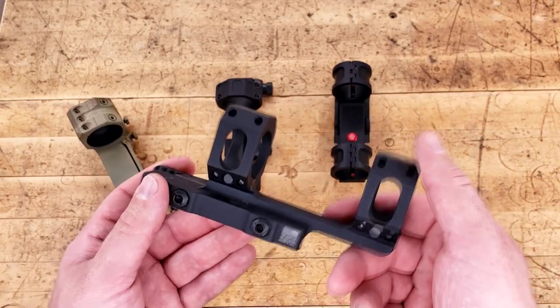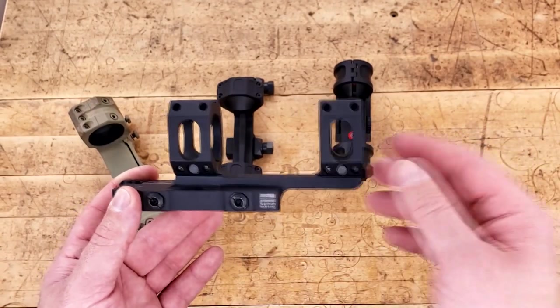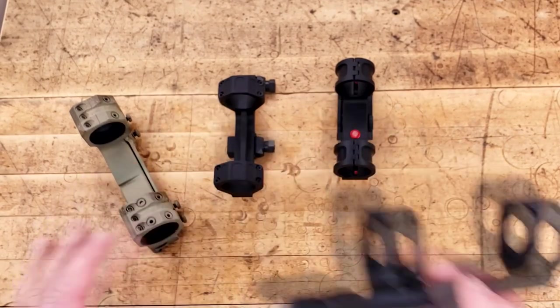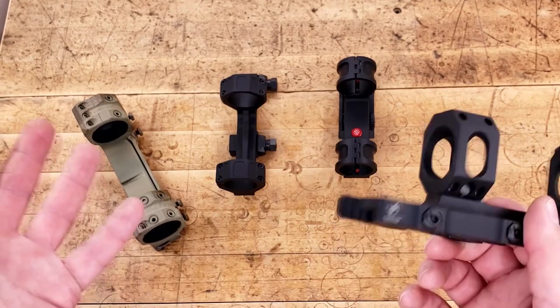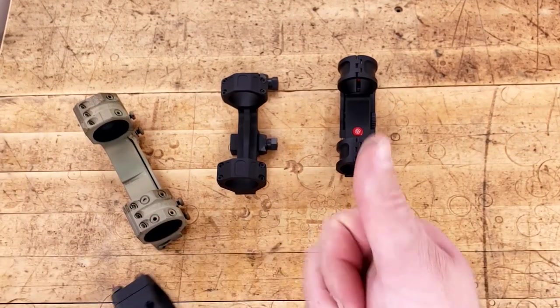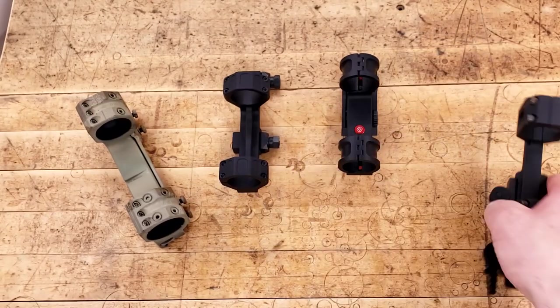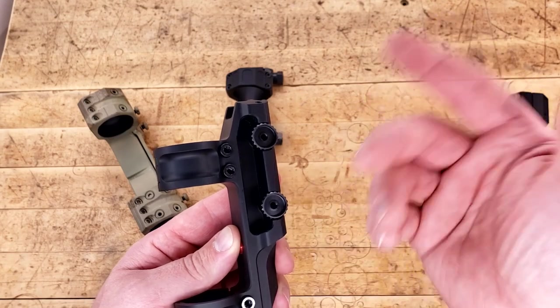So, out of these four, which would I pick? Well, there's a couple of things that you have to take into consideration. One, do you want a quick release? This is the only real technical quick release. Yeah, the Scalarworks has these thumb screws, but there are better ways of doing it. Yeah, it's sleeker, and it's narrower, and it's lighter. But as far as a true quick release goes, the American Defense takes it.